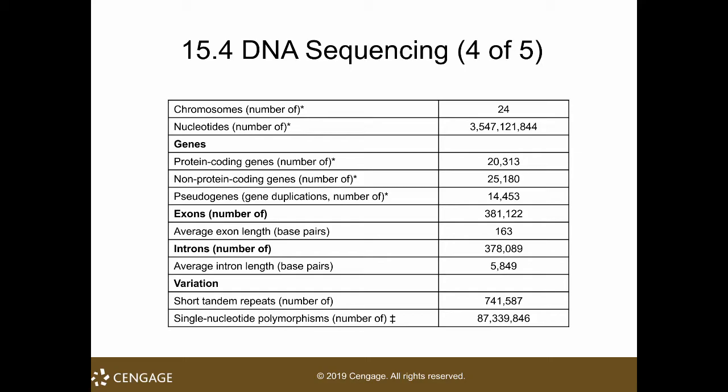You also have gene duplications, exons, and introns. When they sequenced the genome, they found that only a small part of the whole DNA chromosome consists of genes. A large amount consists of non-coding DNA sequences.